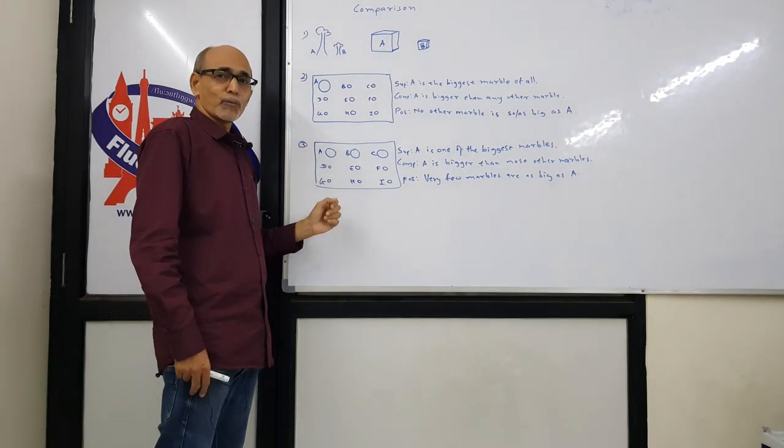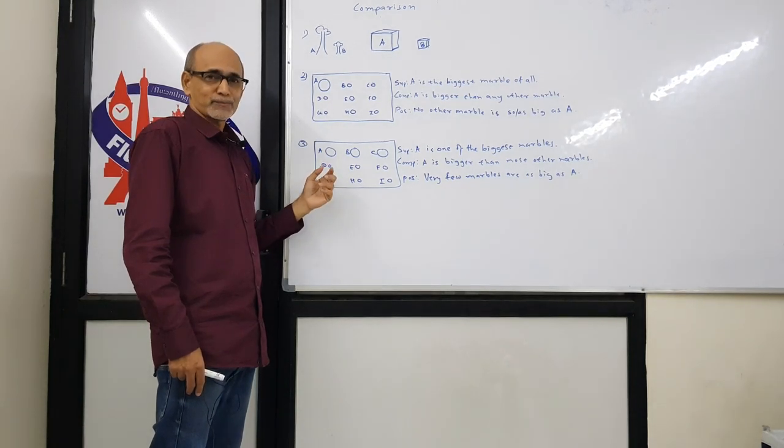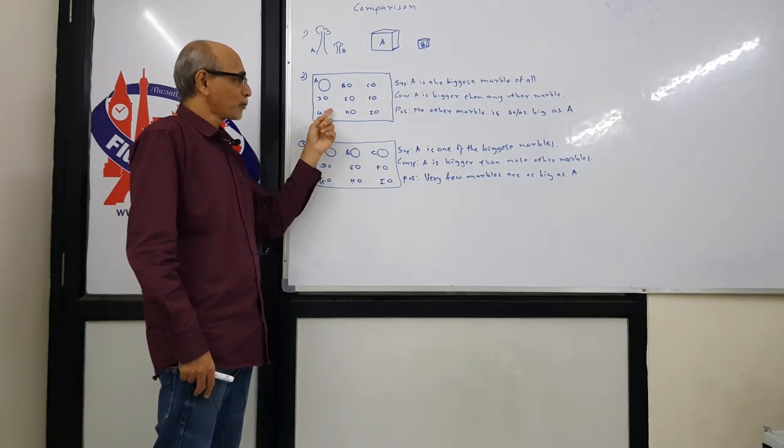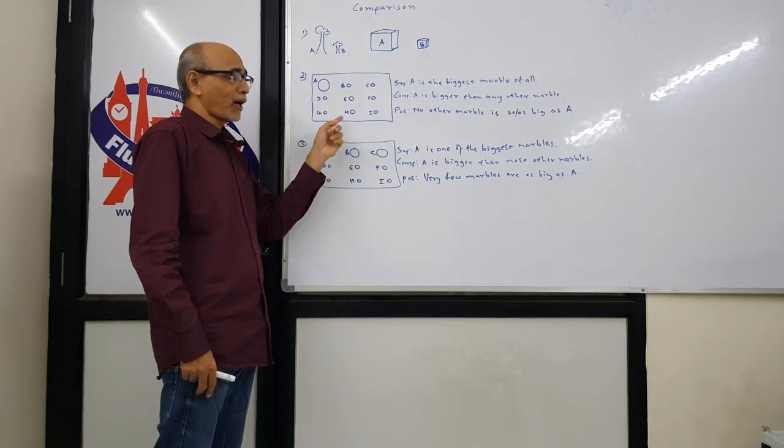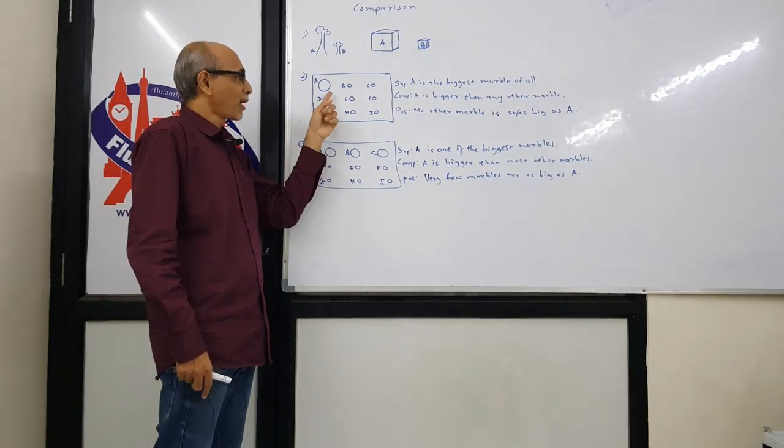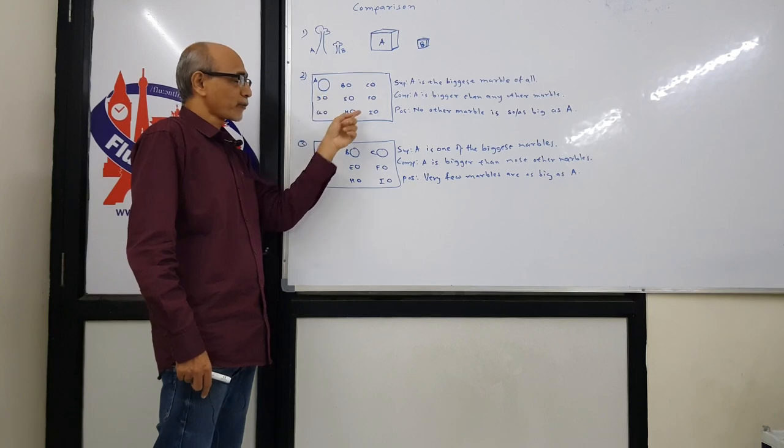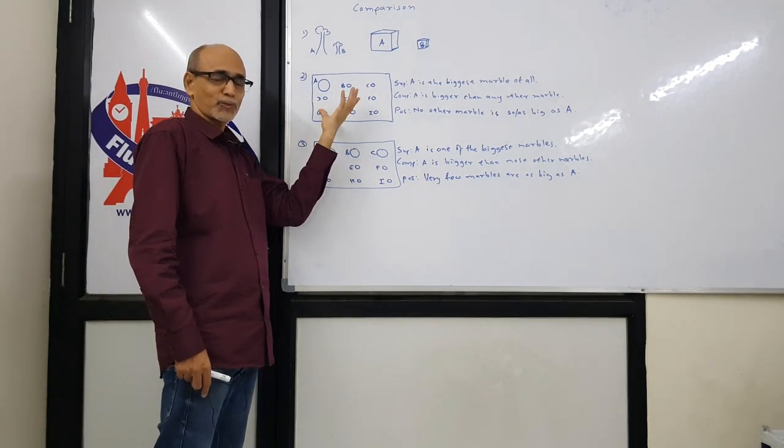When we have more than two items, then there are two possibilities. Here you can see all these are marbles, and marble A is different from the rest. This is one type of situation.